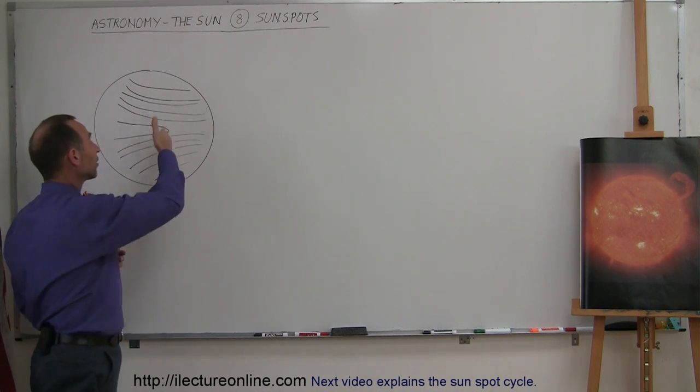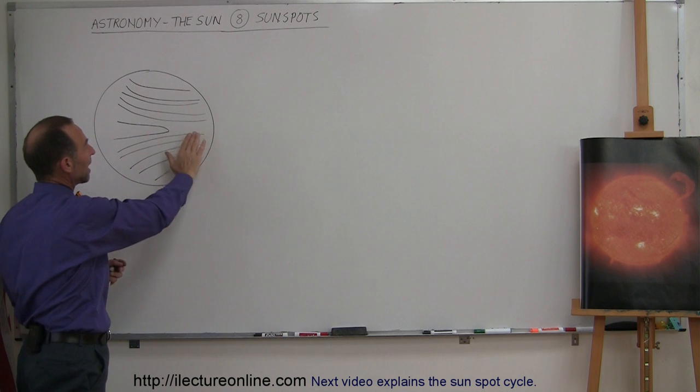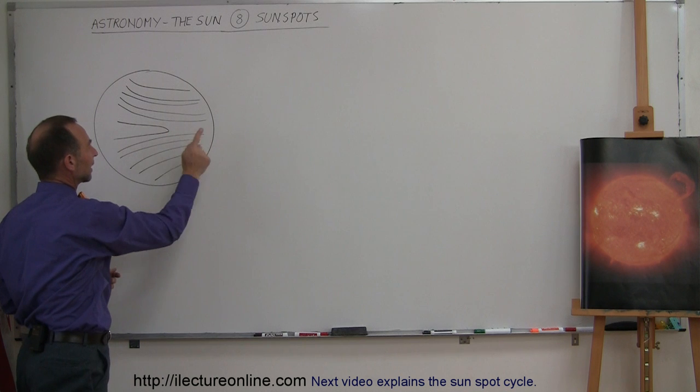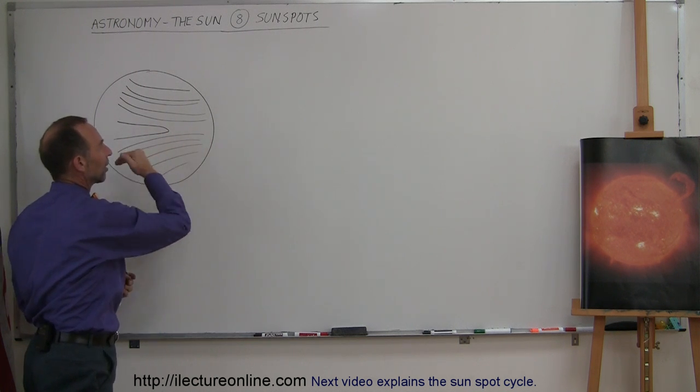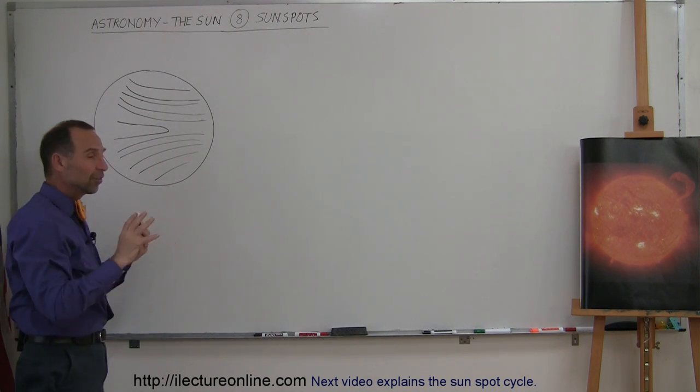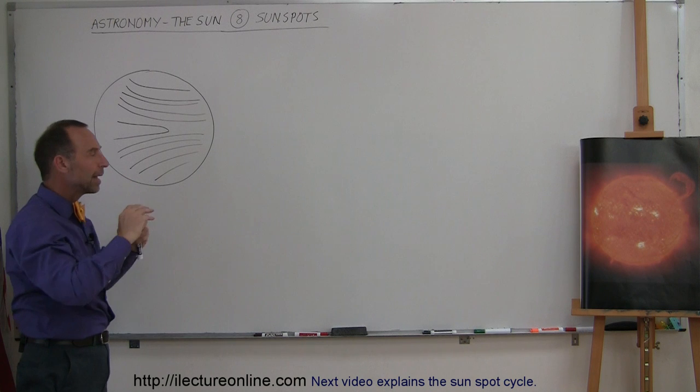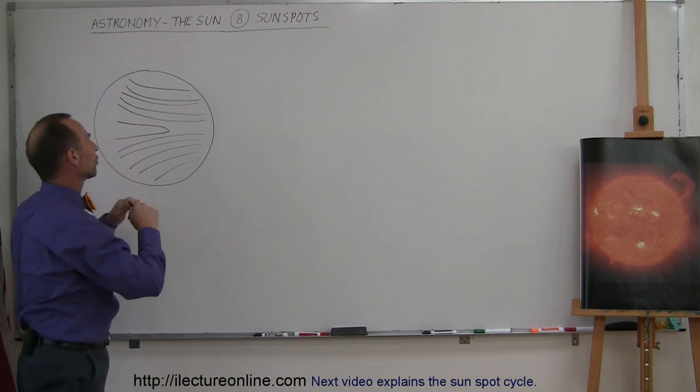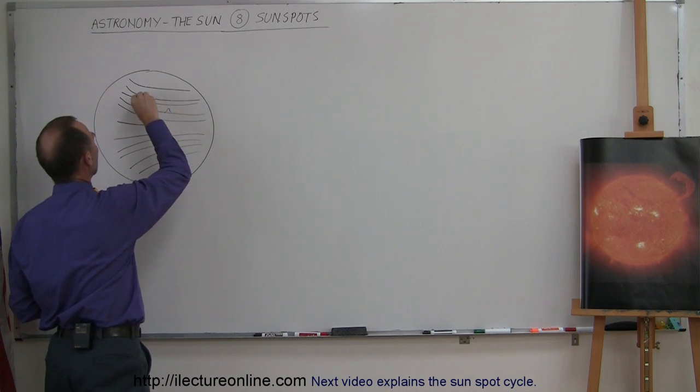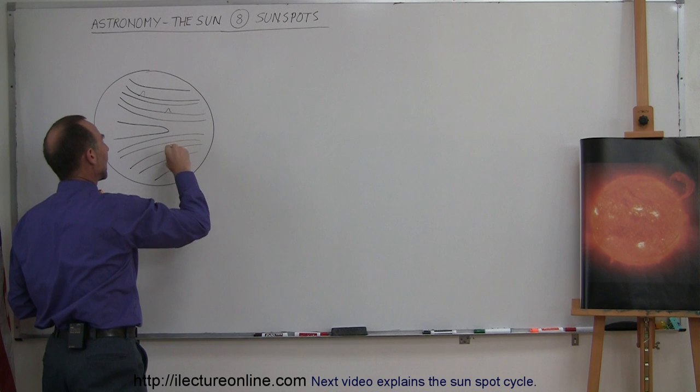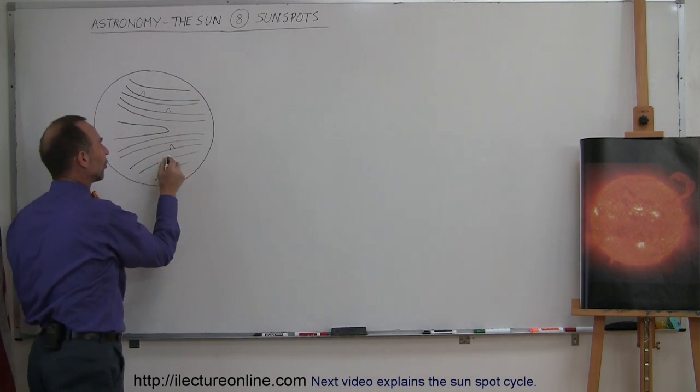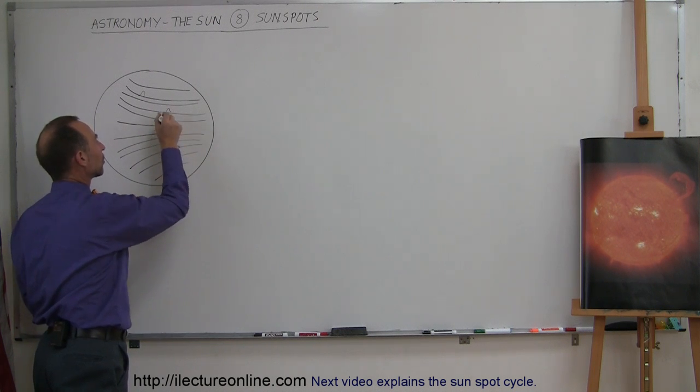Because of that, the magnetic fields inside the Sun tend to get twisted up. After a number of rotations, instead of having the field lines go straight across, they all get bundled up in lines going across the Sun. The magnetic field lines get twisted up and sometimes start popping out of the surface. Wherever the magnetic field line pops out and goes back into the surface, that's where sunspots begin to occur.